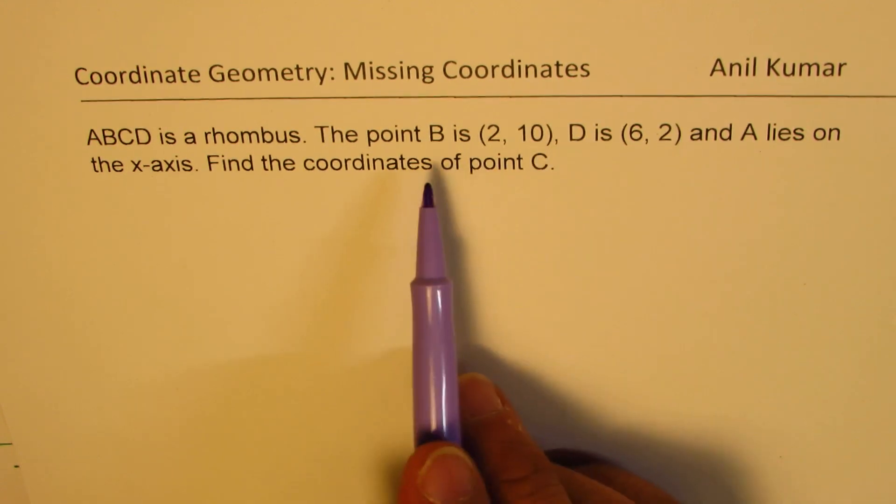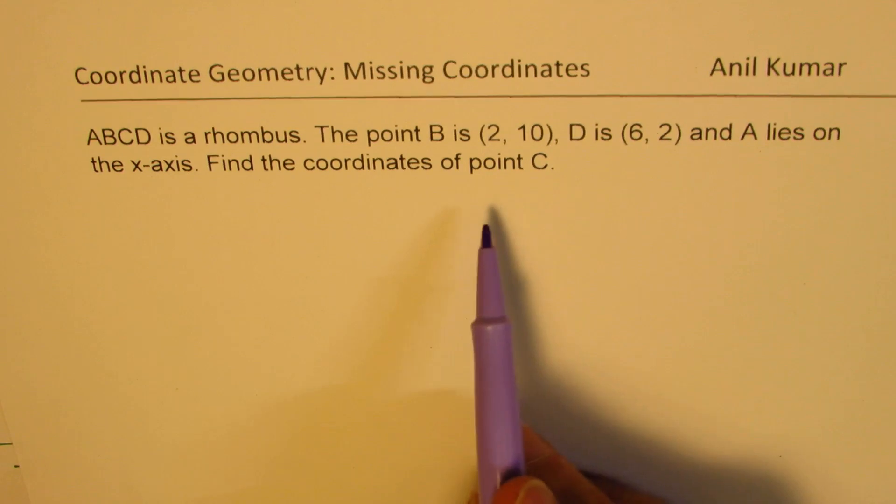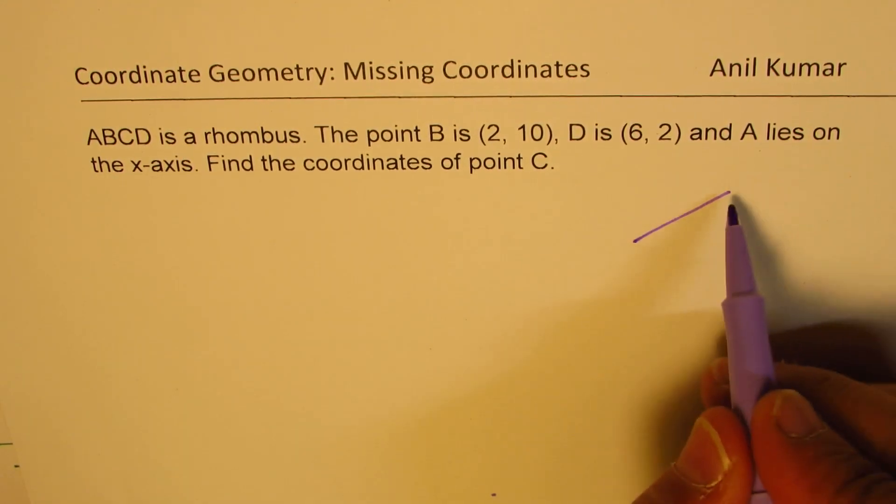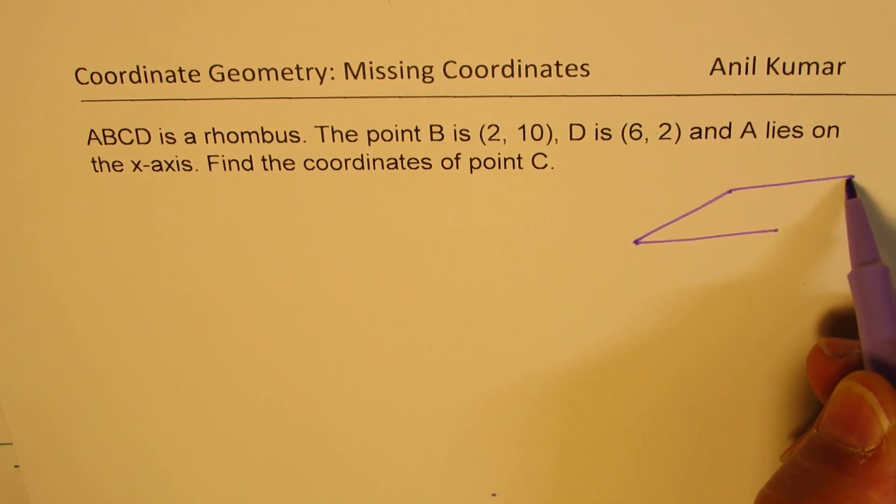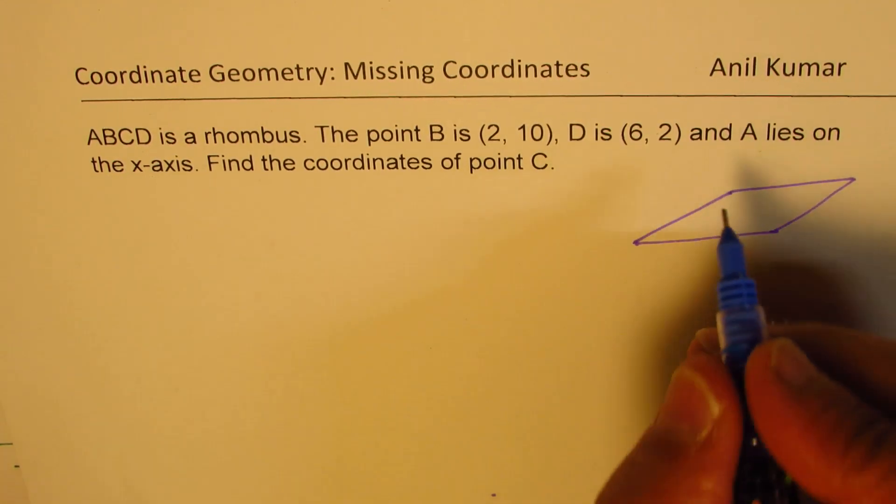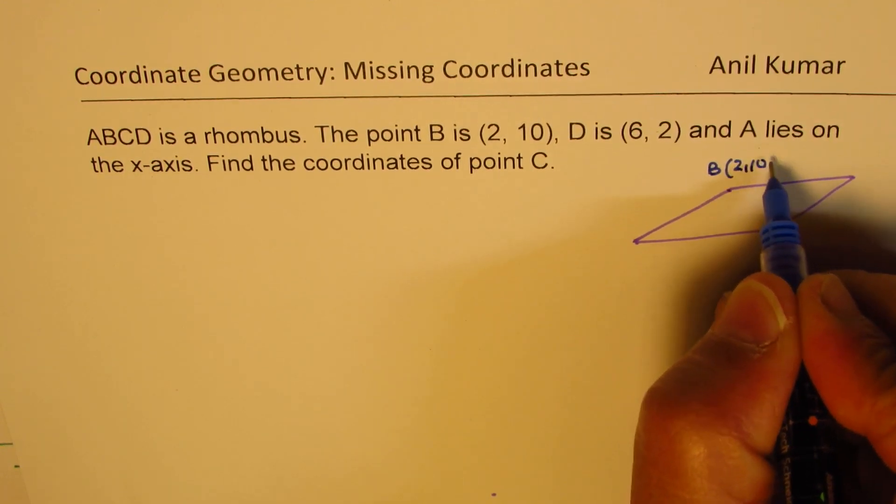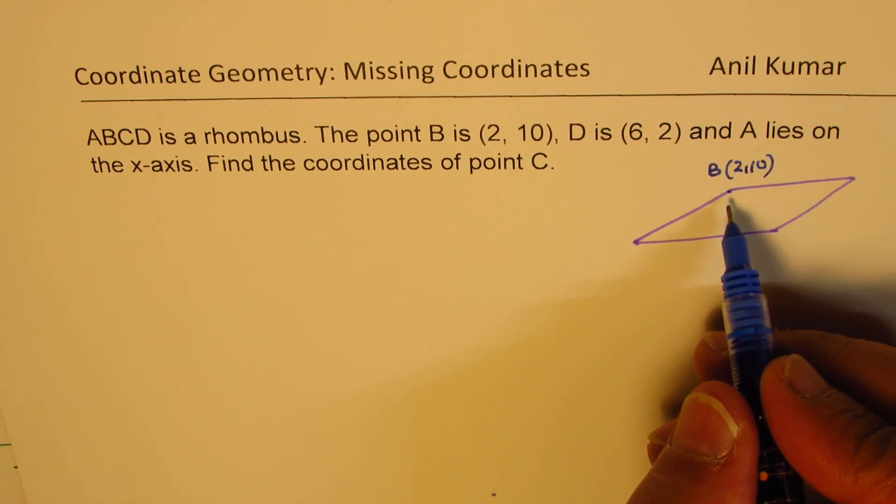So we have B and D which are diagonally placed, and A and C are also diagonal. The diagram could be drawn kind of like this, it's a rhombus. So let's say the diagram is approximately like this. What we're saying here is that point B is (2,10), and if I take this as B...